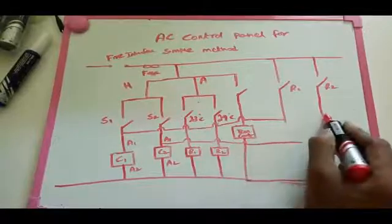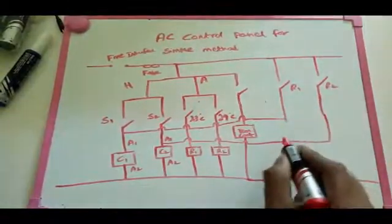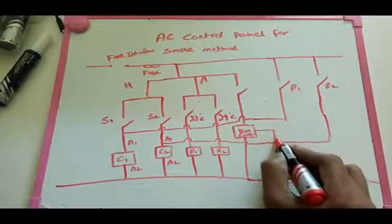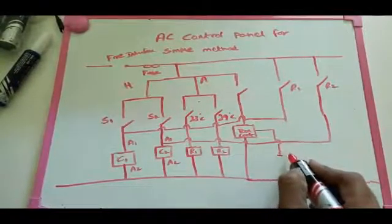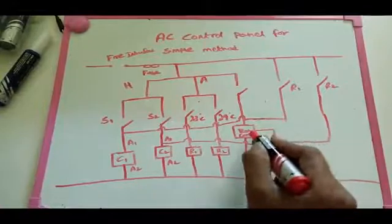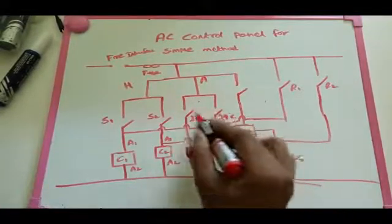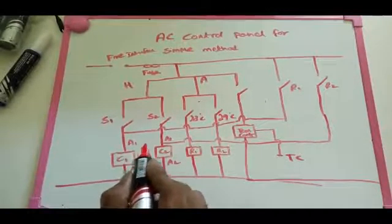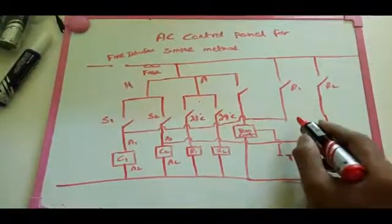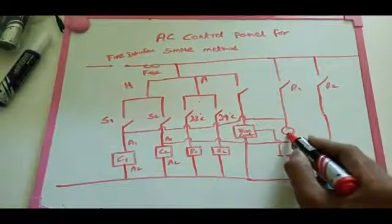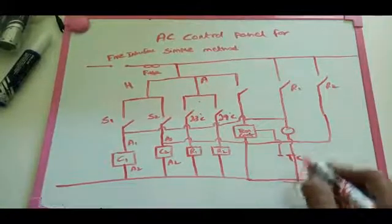This is the method to switch on the ACs based on temperature. The 23 and 29 degree set points are in the temperature controller — don't confuse them with the thermocouple terminals. The alarm 1 and alarm 2 outputs from the controller operate relays R1 and R2, which switch on AC1 and AC2. When the temperature goes high, both relays switch on; when temperature falls below 20 degrees, both relays switch off.